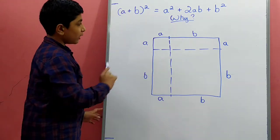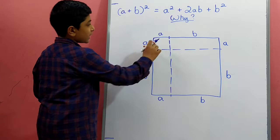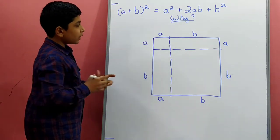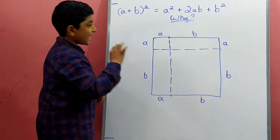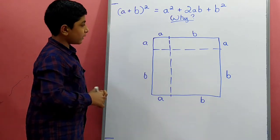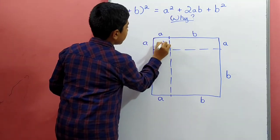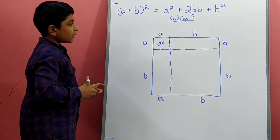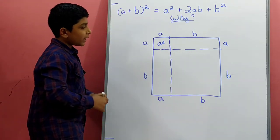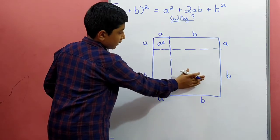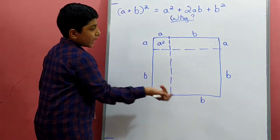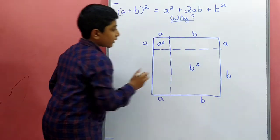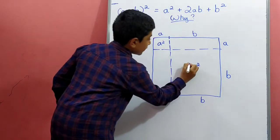So now let's find the area of each. First, the area of the square with side a — since area of a square is side squared, this gives us a square. Then we have the square with side b, and that area is b square.